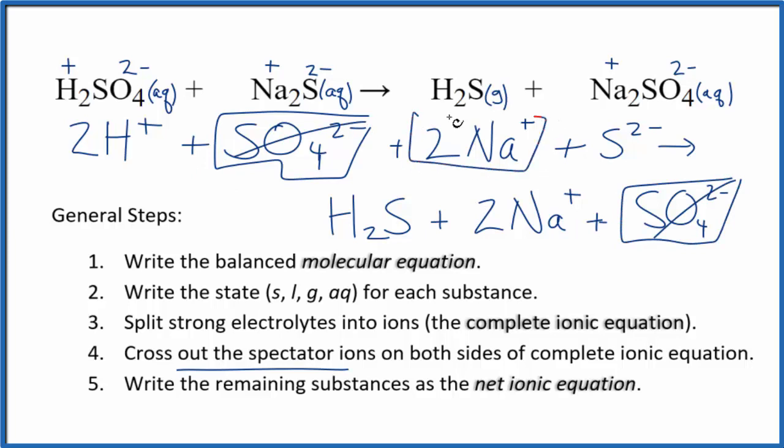Two sodium ions here in the reactants, and in the products, spectator ions. Cross them out. What's left, that's the net ionic equation for H2SO4 plus Na2S.